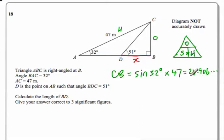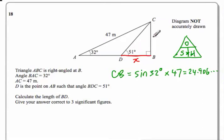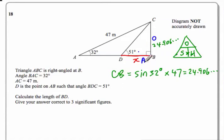I'm going to keep that full value in my calculator without rounding, because I haven't finished — there's still a lot to do. Now looking at the second, smaller triangle: I'm going to label this side as the opposite and this one as the adjacent, and we know this side is 24.906. For the small triangle we're looking at O and A, which means tangent.